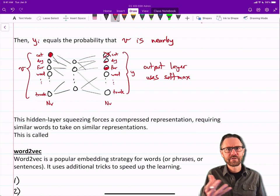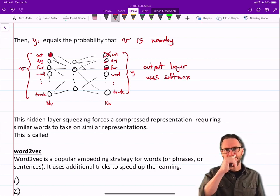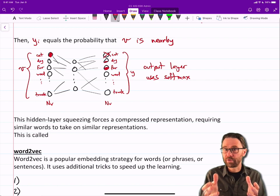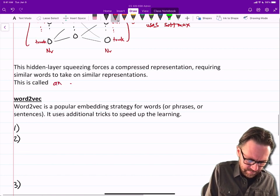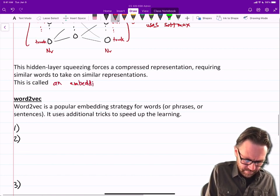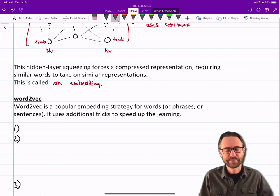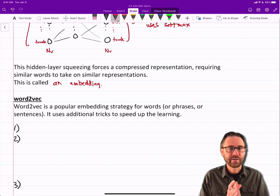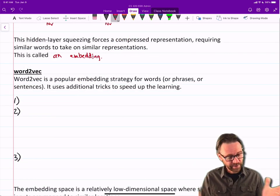This hidden layer is squeezing. We're going to, just like an autoencoder, it is an autoencoder. Well, it's very similar to an autoencoder. The hidden layer is going to squeeze the representation and force it to be a compressed representation. This is going to require similar words to take on similar representations. So this is called an embedding. You've probably heard me use that word embedding before. It's a latent representation or an embedding, a sort of compressed representation of a high dimensional input space. Because it's compressed, it has to semantically organize the space.